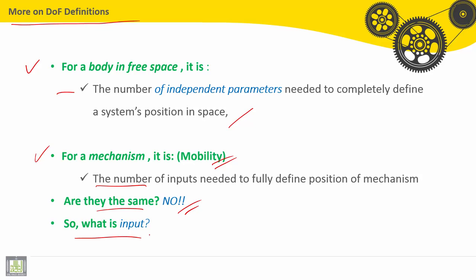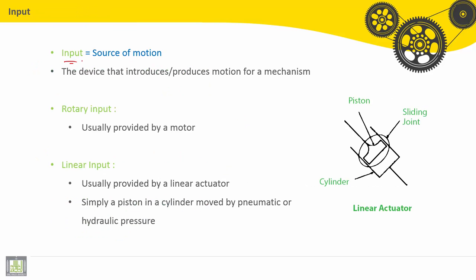So what is input? Input is a source of motion. The device that introduces or produces motion for a mechanism. Two types are there for input. Rotary input, usually provided by a motor, or linear input, usually provided by a linear actuator. It is simply a piston in a cylinder moved by pneumatic or hydraulic pressure.